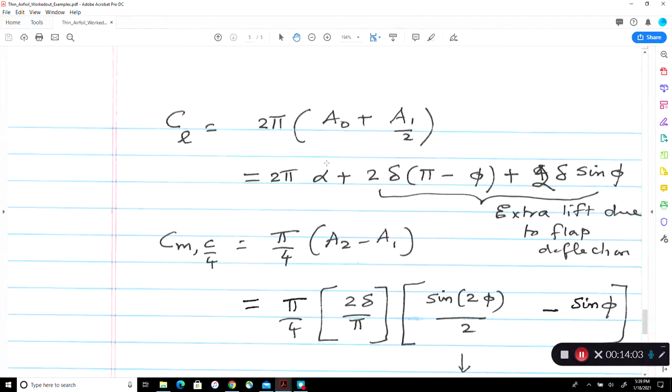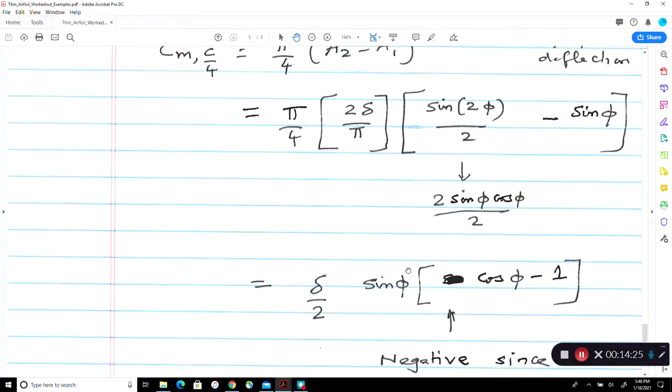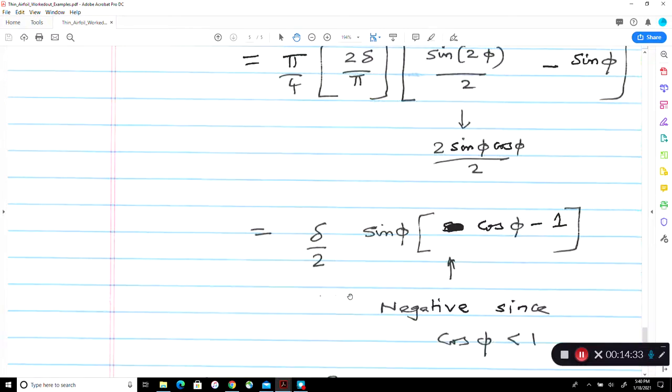We notice that we get a 2 pi alpha, which is the original straight line lift, plus some extra lift due to the deflection of the flap. So when we deflect the flap, we are increasing the lift because we are changing the camber. Notice that the increment in the lift is linearly proportional to delta. How about the pitching moment? It's a negative number. Therefore, we get a nose down pitching moment. The more we deflect the flap, the more the nose down pitching moment we get. It's proportional to the amplitude of deflection of the flap where delta is in radians.